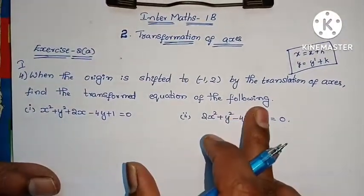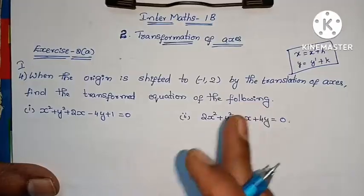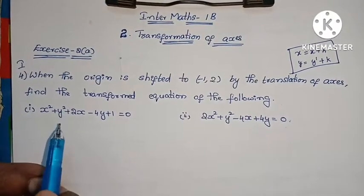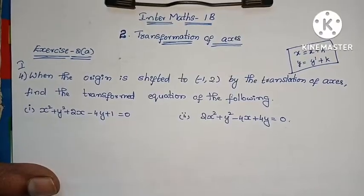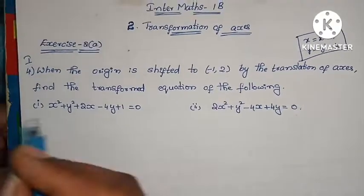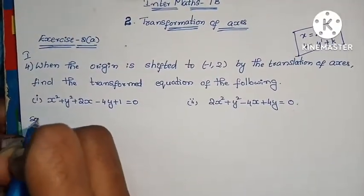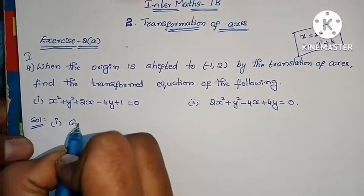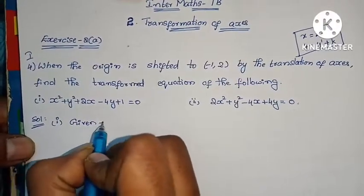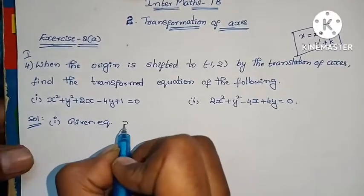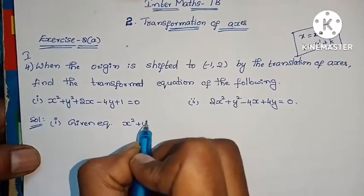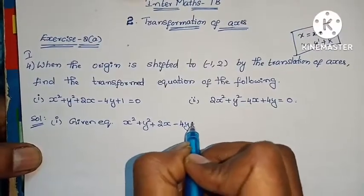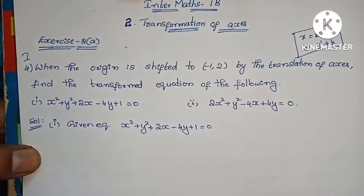Find the transformed equation of the following. This is the original equation and this is the solution. First, given equation: x square plus y square plus 2x minus 4y plus 1 equals to 0.